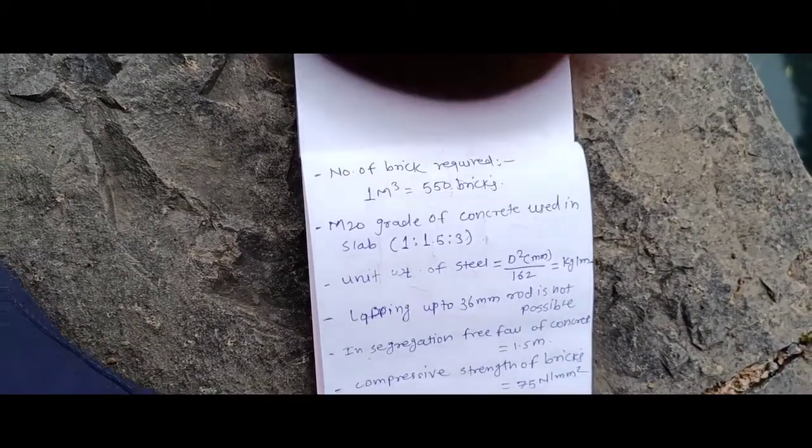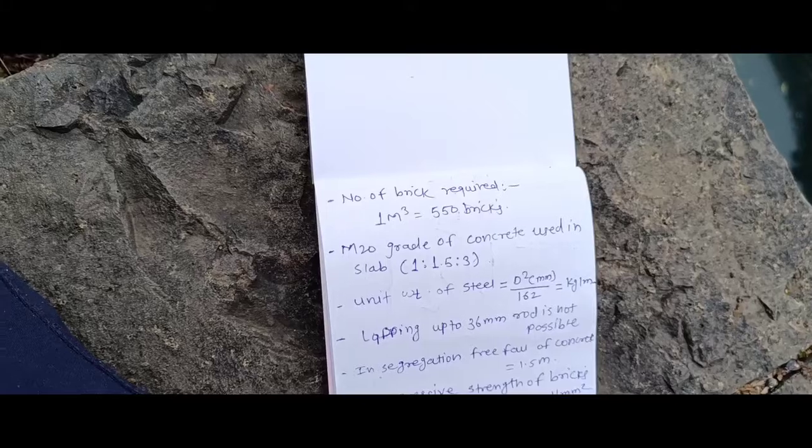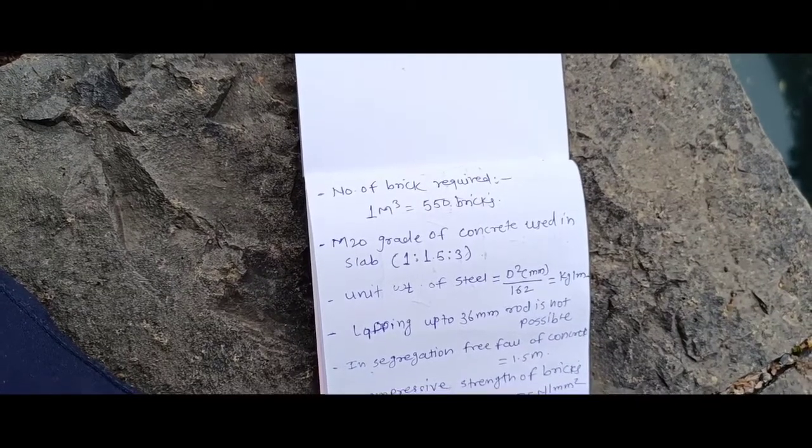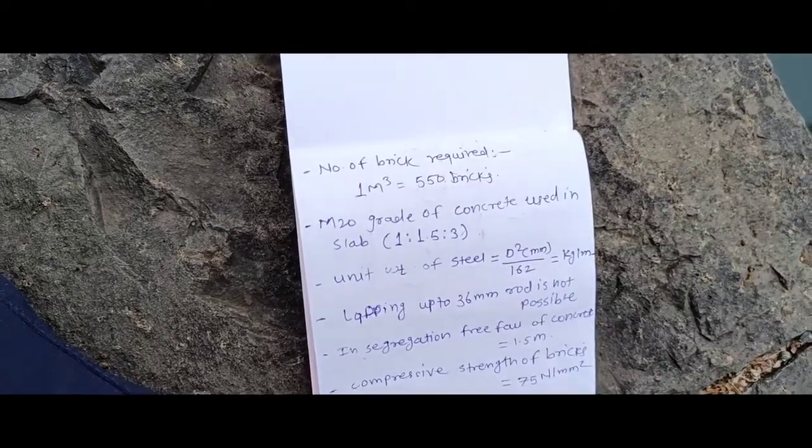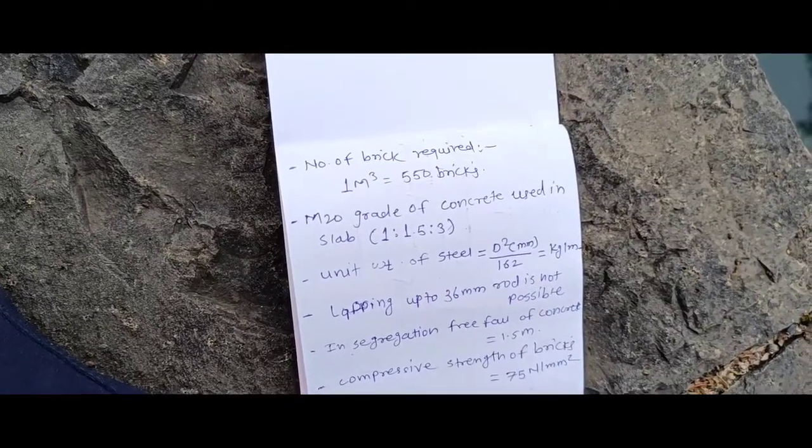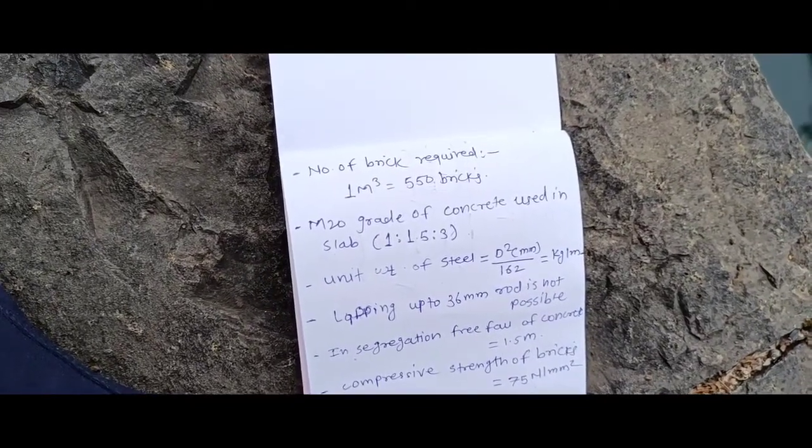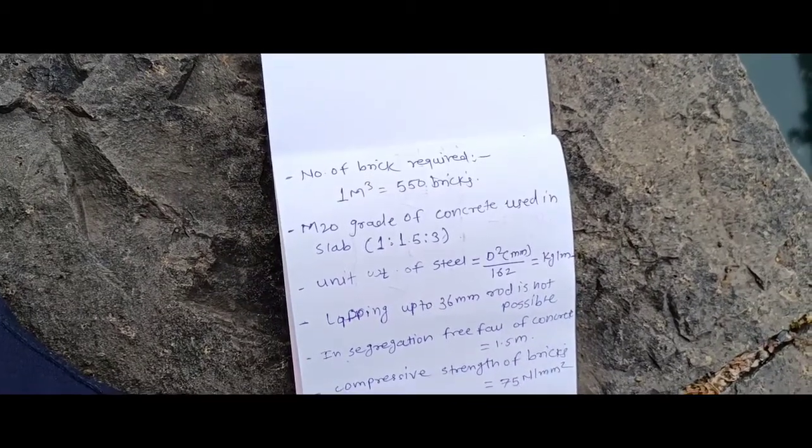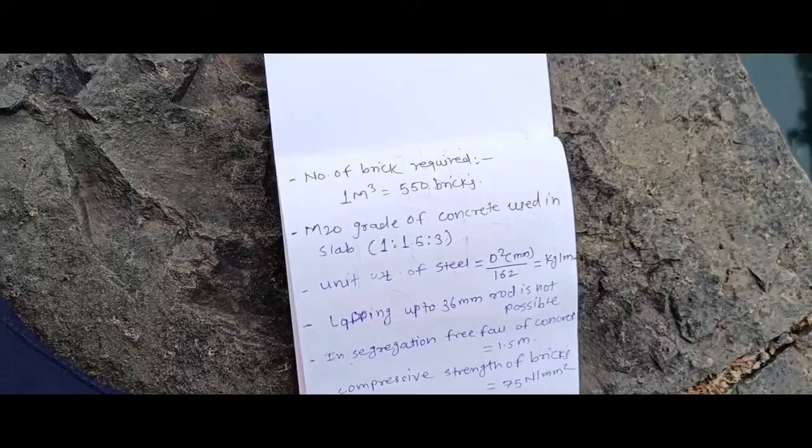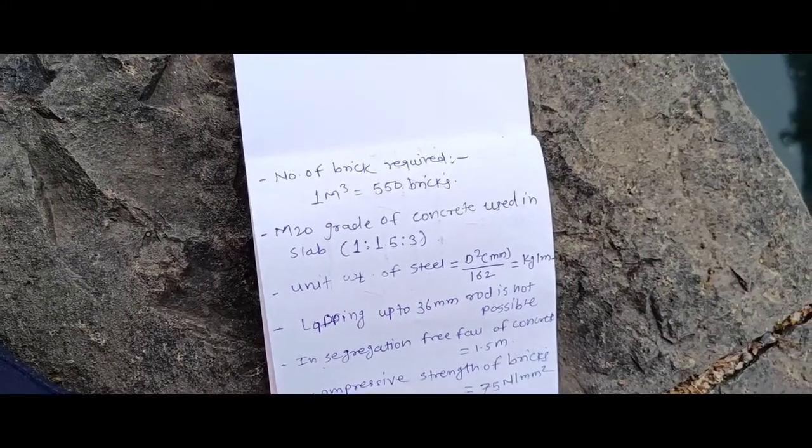Unit weight of steel formula is: diameter squared divided by 162 equals the unit weight of steel in kilograms per meter. Lapping is done up to 36 mm diameter rod bars.